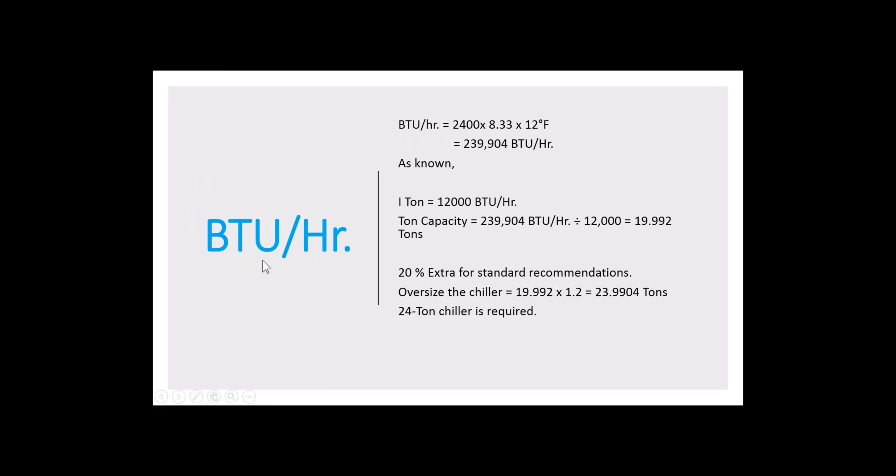Let us find out British thermal units per hour. Just apply the given values in the formula. Q is 2,400 gallons per hour times 8.33 times 12 degrees Fahrenheit which we calculated. Once you multiply these numbers, you can get 239,904 British thermal units per hour.